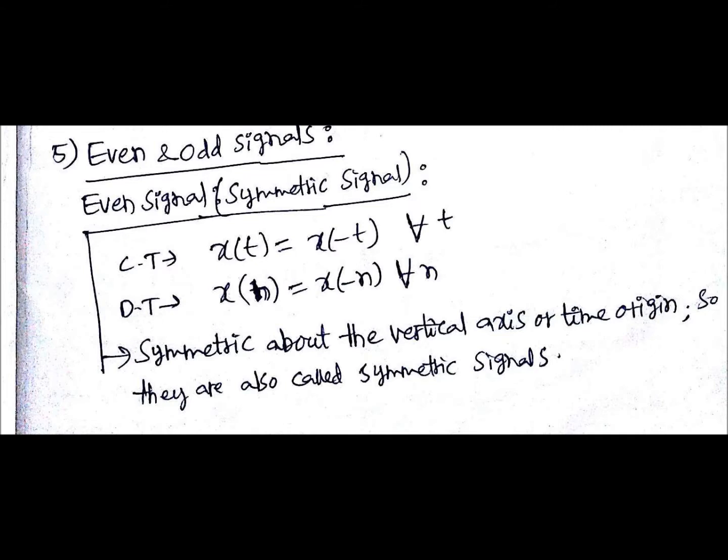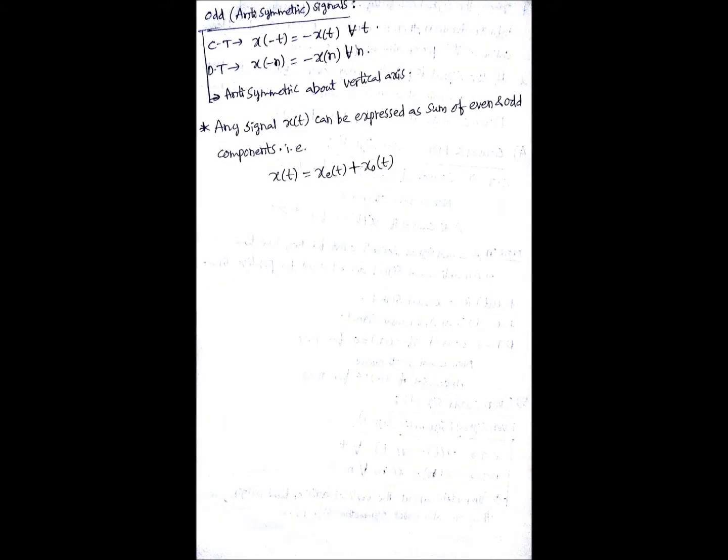Odd or antisymmetric signal is different. In continuous time, x(-t) equals -x(t) for all time t, and in discrete time it will be x(-n) equals -x(n) for all n time or n samples.